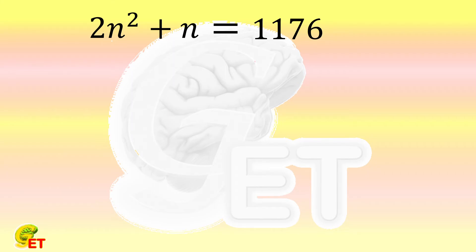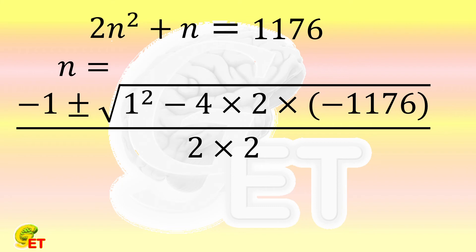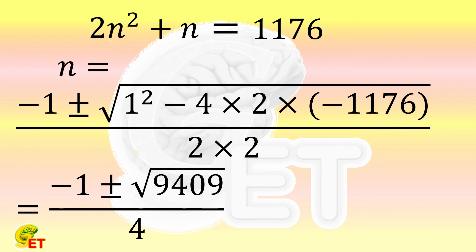According to the quadratic formula, n is equal to minus 1, plus or minus the square root of square of 1 minus 4 times 2 times minus 1176 over 2 by 2. And it is equal to minus 1 plus or minus square root of 9409 over 4, which is equal to minus 1 plus or minus 97 over 4.